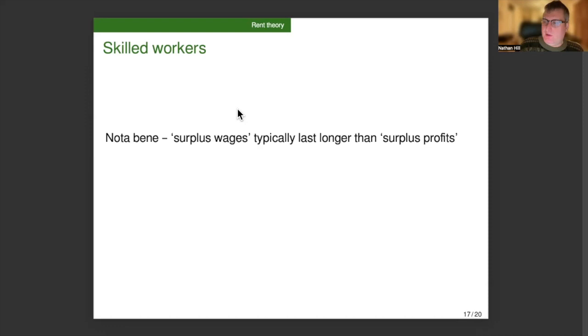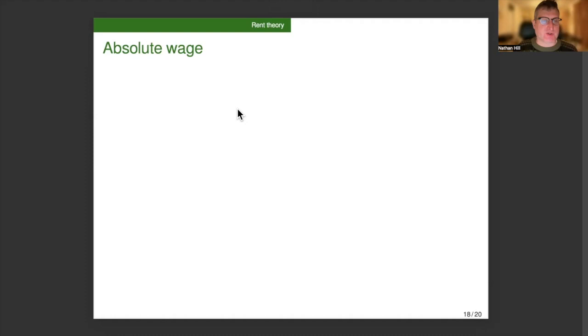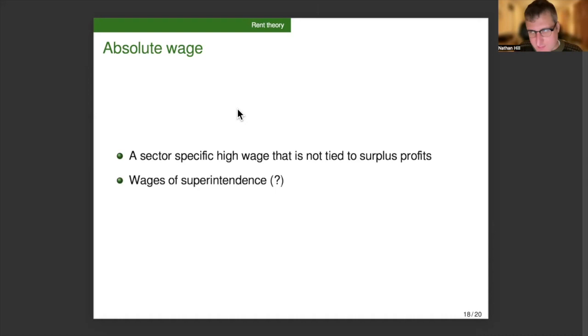The third application of rent theory to wage determination, absolute wage. Here we're looking for a sector-specific high wage that is not tied to surplus profits. Instead, the logic of it has to be you need to pay people more in order to work in this sector. The thing that I thought of that might fit the bill is wages of superintendents, where you want your managers to be well-paid more or less so their class solidarity is with the proprietors and not with the laborers. So you have to pay them a lot in order to get that class allegiance, and this affects the whole sector. It also occurs to me that maybe particularly dirty or dangerous things could be analyzed in this way, although I'm not convinced that's the right way to analyze them.